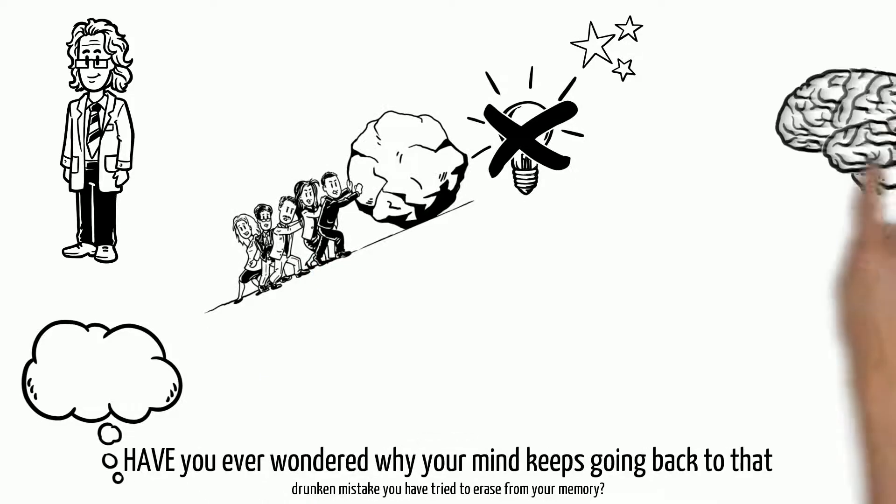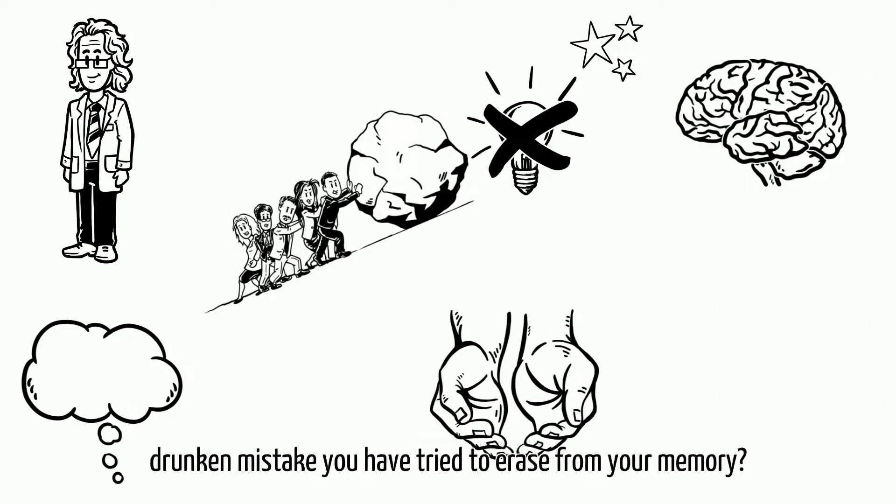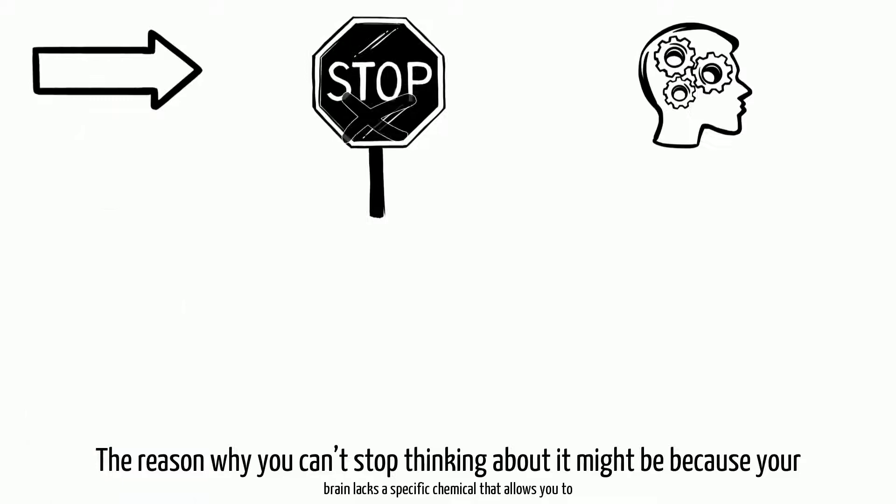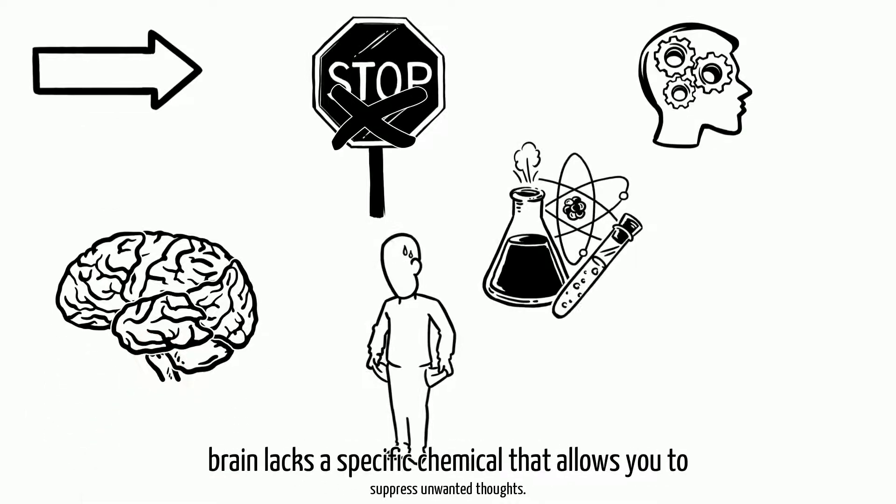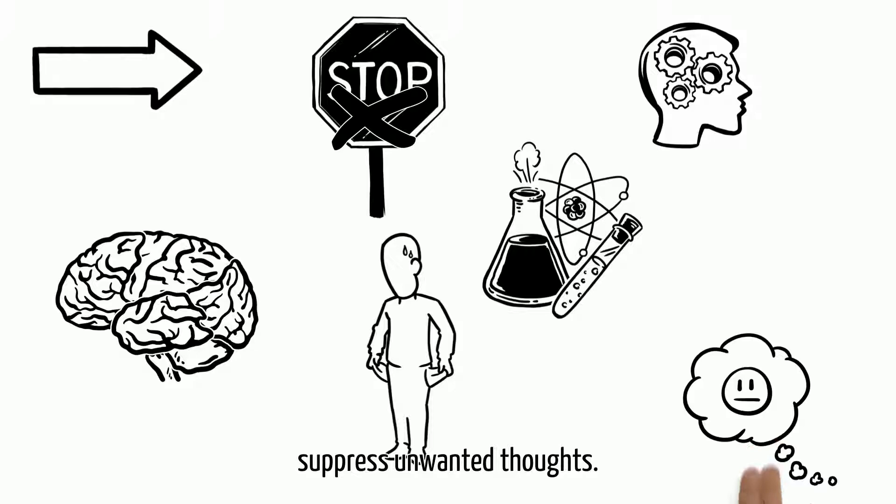Have you ever wondered why your mind keeps going back to that drunken mistake you have tried to erase from your memory? The reason you can't stop thinking about it might be because your brain lacks a specific chemical that allows you to suppress unwanted thoughts.